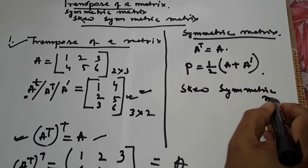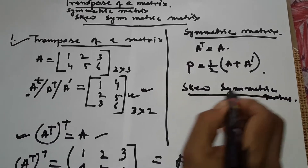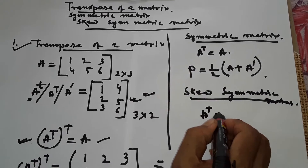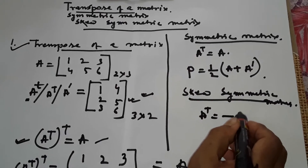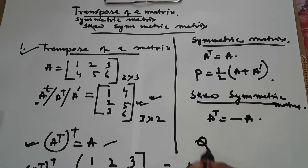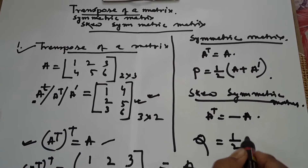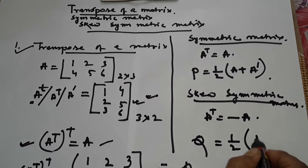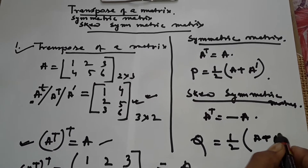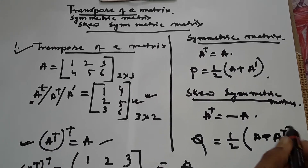Skew-symmetric matrix: A to the power T equal to minus A. Otherwise, Q equal to 1 by 2 into A minus A to the power T.